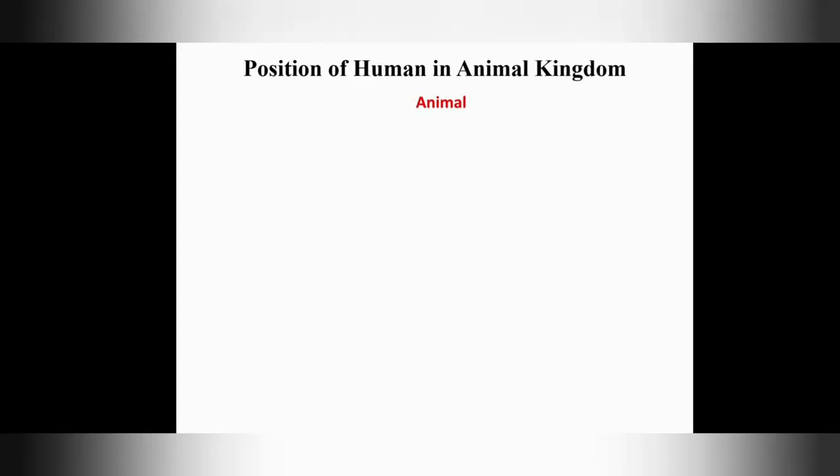By the influence of Darwin's theory, many scientists had started searching for early human or hominin remains from all over the world, resulting in discoveries from different parts of Asia, Africa, and Europe. However, before discussing those early human remains and their journey through the lane of evolution, one needs to know the position of human in the animal kingdom for better understanding.